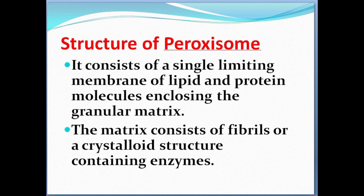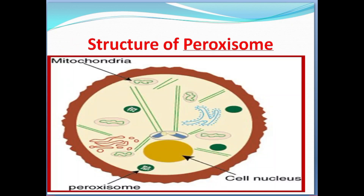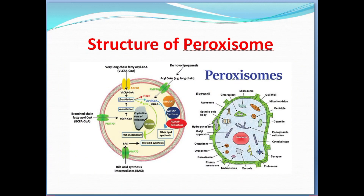The matrix consists of fibrillar and crystalloid structures. These fibrillar and crystalloid structures contain enzymes — highly powerful enzymes present inside the peroxisome.